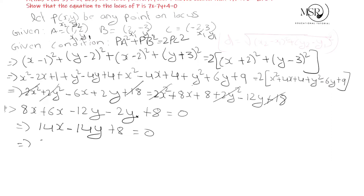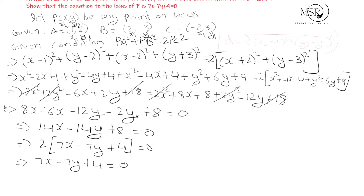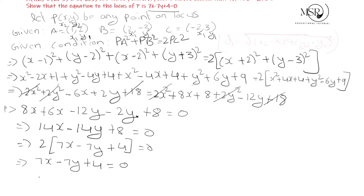Taking 2 as common factor from the left-hand side: 2(7x - 7y + 4) = 0. Since 2 divides into 0, we get 7x - 7y + 4 = 0. This is the required locus equation. Hence proved. Thank you all.